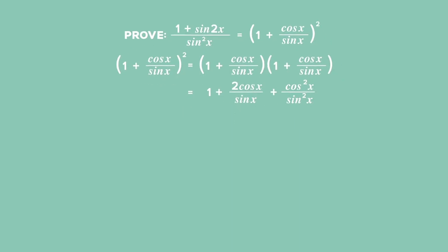Next, add the terms together by finding the LCD, the lowest common denominator equal to sin squared x. You get sin squared x plus 2 cos x times sin x plus cos squared x all over the LCD sin squared x.